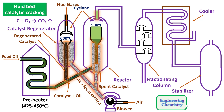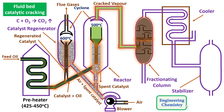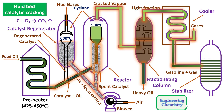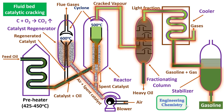The cracked vapors are pushed into a fractionating column to get different fractions of gasoline. Heavy oil is removed from the bottom while the lighter fraction is removed from the top as vapors, which are sent to a cooler to condense into liquid form. Any remaining gases are removed from the top, and the mixture of gas and gasoline is sent to a stabilizer. In the stabilizer, pure gasoline is collected from the bottom with an octane number of around 85 to 90, and gases are removed from the top. The key advantage of fluid bed catalytic cracking is that it is a continuous process and saves time.